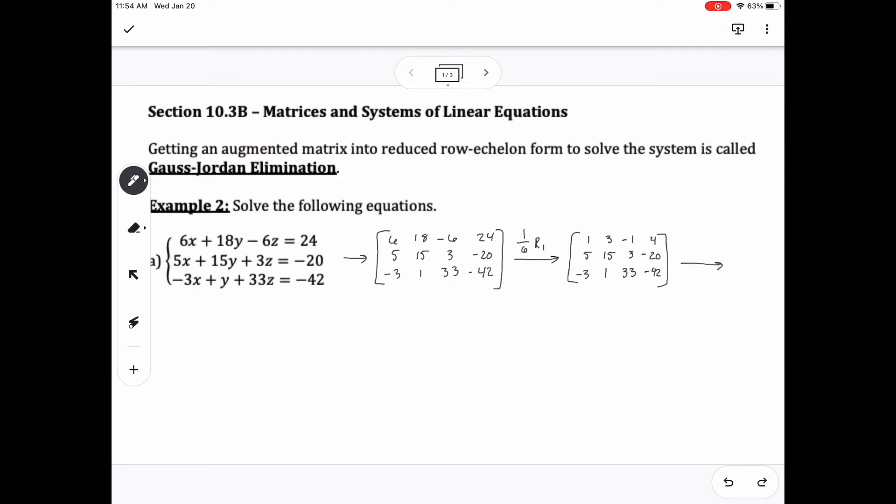We do these problems, or to do Gauss-Jordan elimination, the same way that we did just regular Gauss elimination. I want the first row, first entry to be a 1, so I multiply that row by 1/6, and then I want all the other ones to be zeros, so I will multiply this first row by negative 5 and add it to row 2, and then I'll multiply row 1 by 3 and add it to row 3.